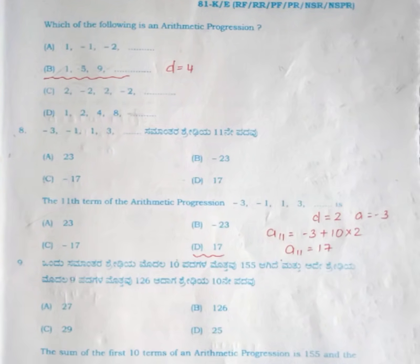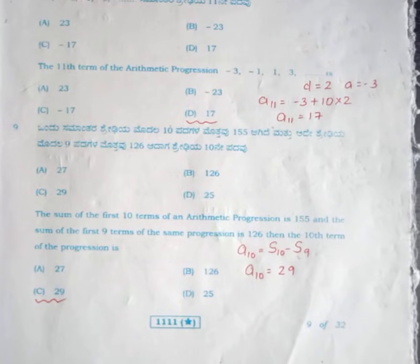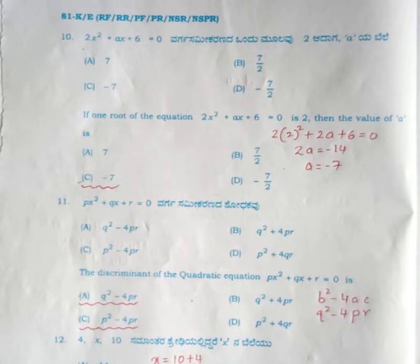For the eighth question, the eleventh term of the arithmetic progression — the answer is option D, 17. For the ninth question, a very simple question, the correct answer is option C, 29. For question number 10, the correct answer is option C, minus 7.